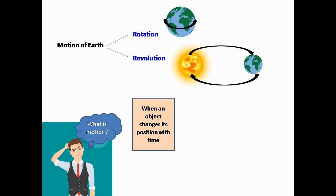When Earth spins on its own axis, we call it rotation. At the same time, while Earth is spinning on its own axis, it also revolves around the Sun in an elliptical orbit. We say this as revolution, and there is no deviation in its path.